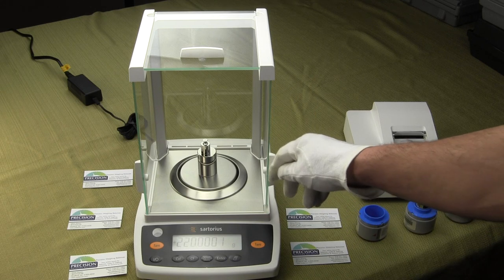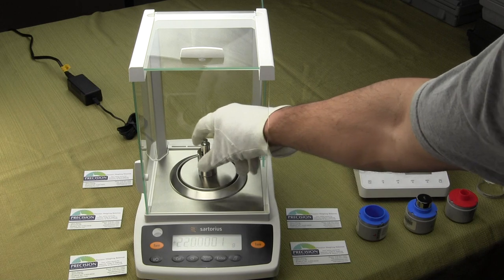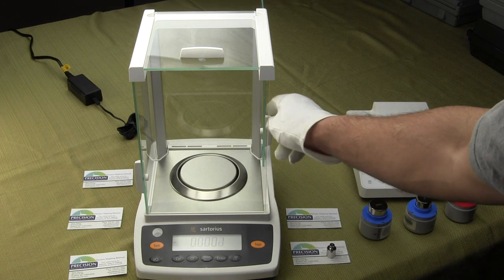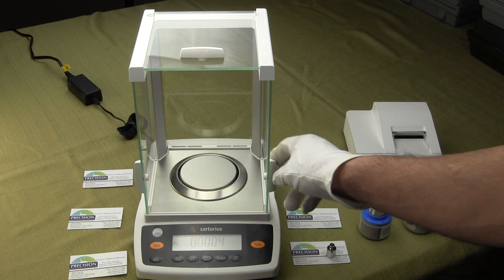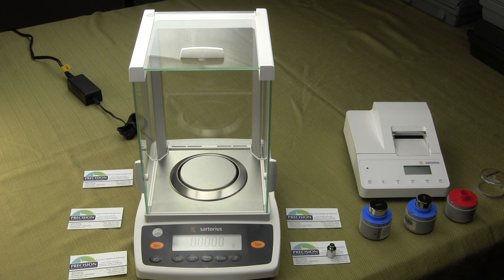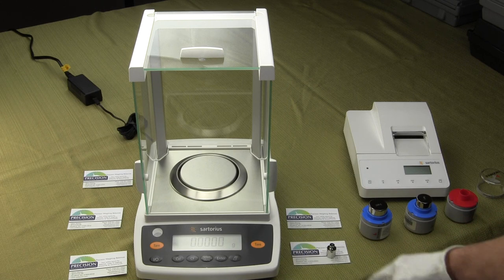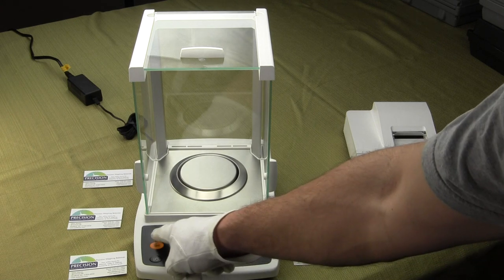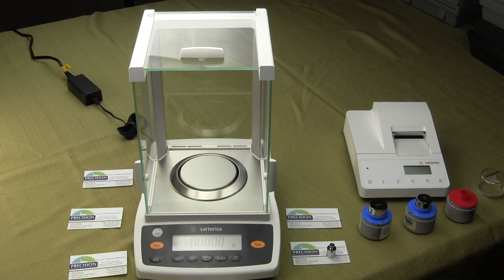Calibration of the balance is very simple. All the Entris series are external calibration only. To perform calibration, first you want to level your balance. On this particular model, you have two adjustable feet in the front and a spirit bubble indicator in the upper left-hand corner.